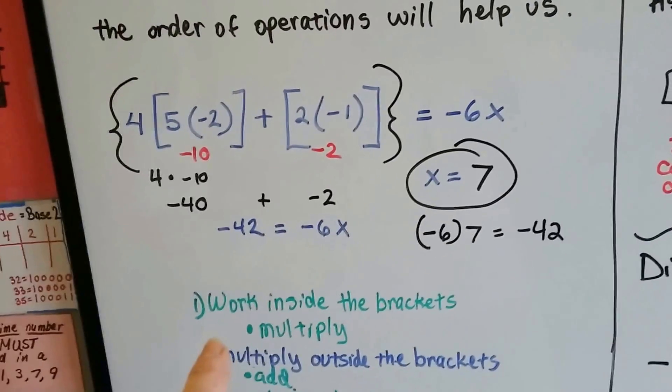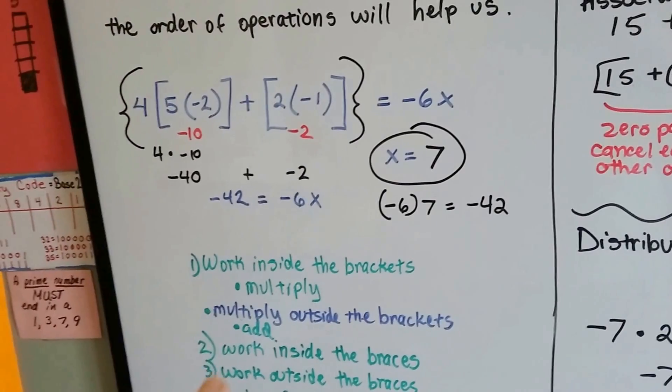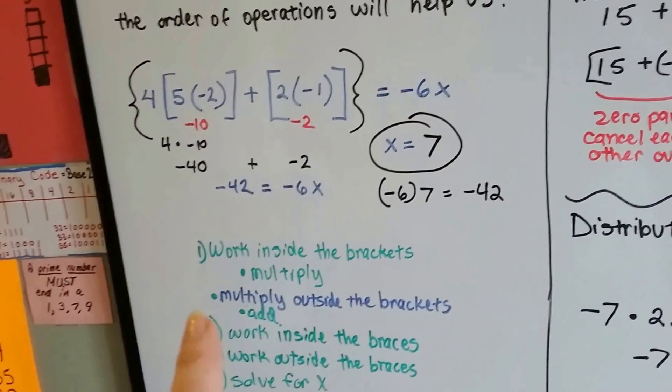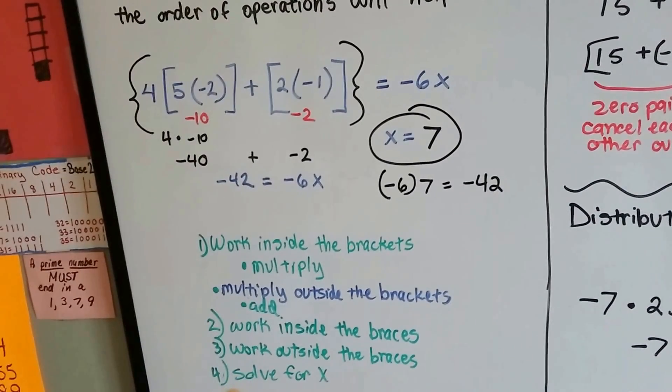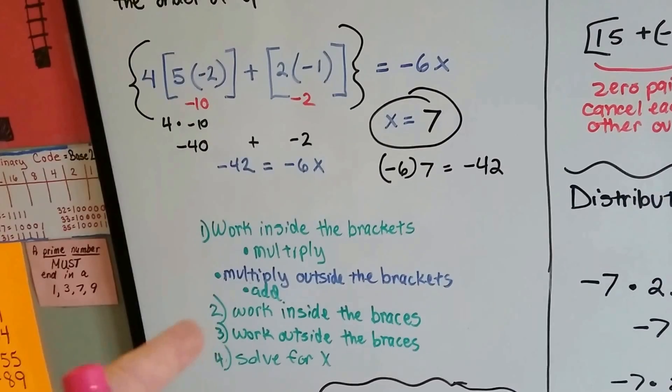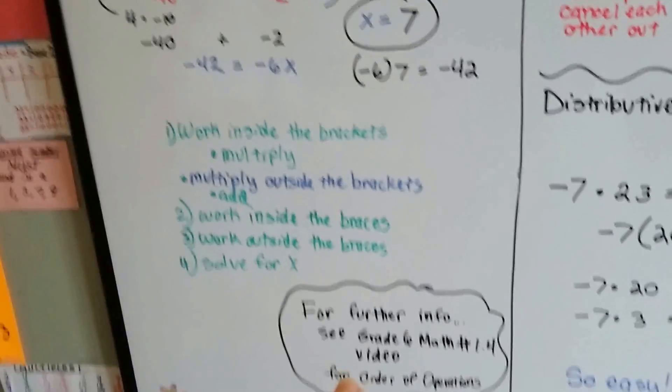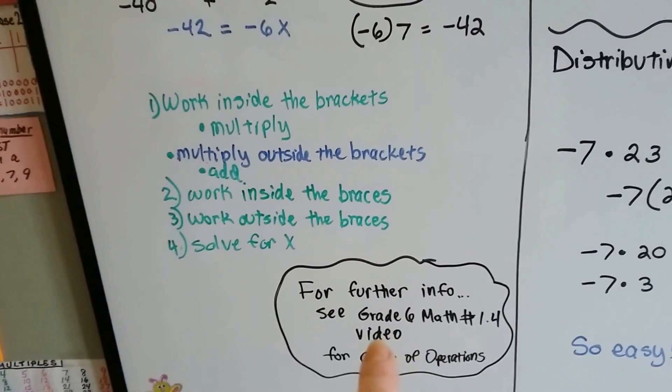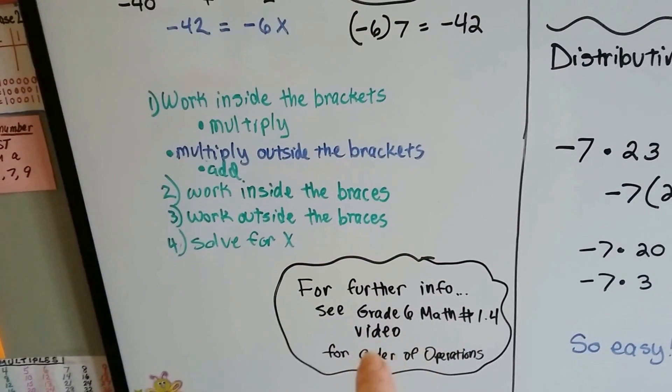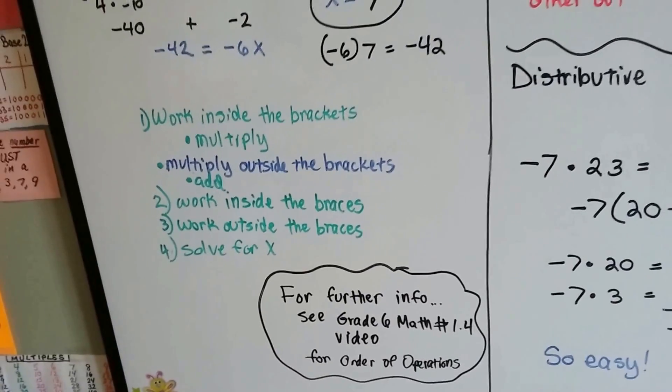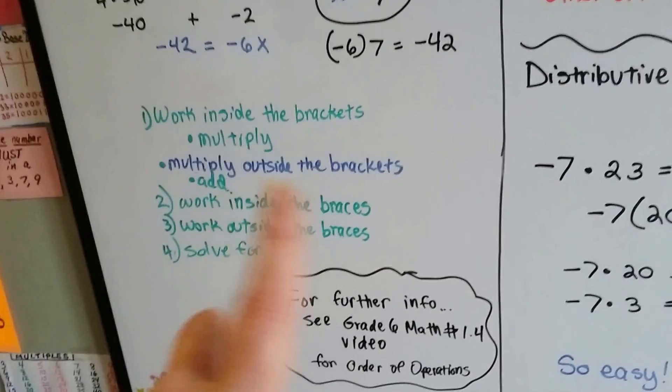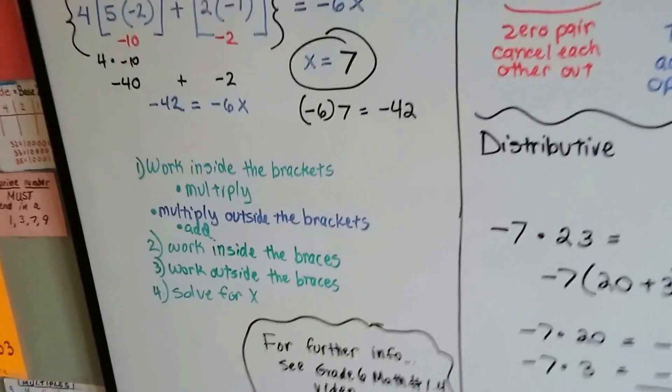So what we did was we worked inside the brackets, multiplied, multiplied outside the brackets, added, worked inside the braces, worked outside the braces, and solved for x. If you're having any trouble with order of operations, go back to video number 1.4 in my grade 6 math videos and it'll explain it further.